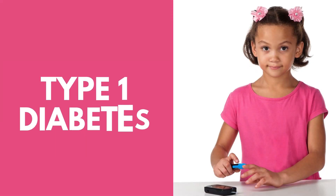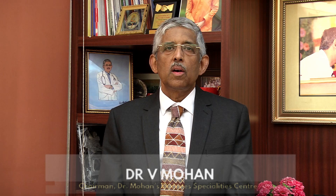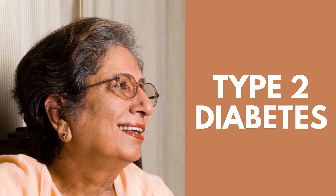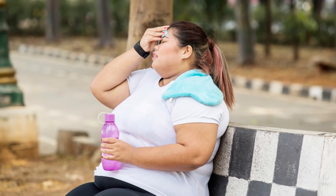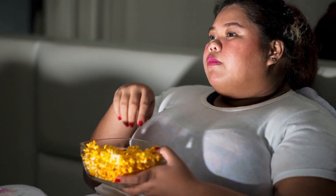People know about type 1 diabetes, which comes in children where they have to take lifelong insulin injections three or four times a day. Of course, all of you are familiar with type 2 diabetes, which usually comes in adults but can come at a younger age group if children are overweight or obese, have a faulty lifestyle, or put on too much weight.